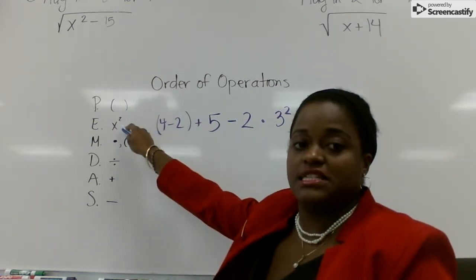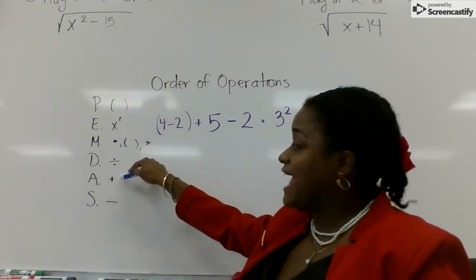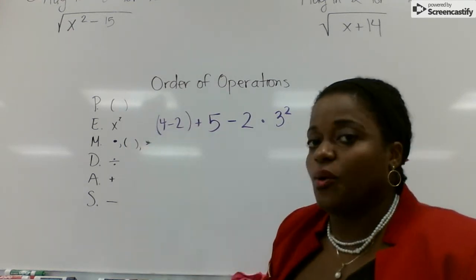So P stands for parentheses, E is exponents, M is multiplication, D is division, A is addition, S is subtraction. That is the order.